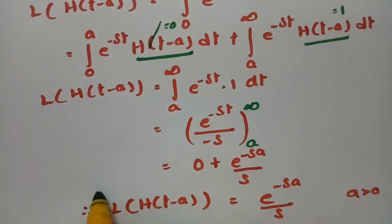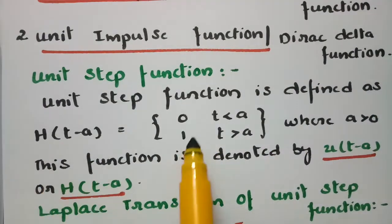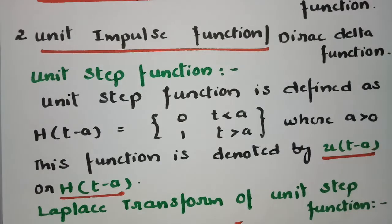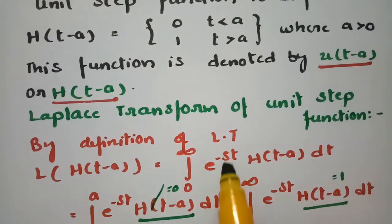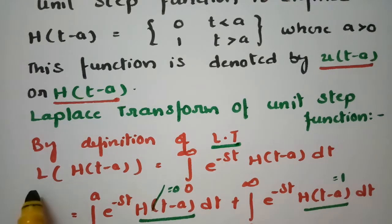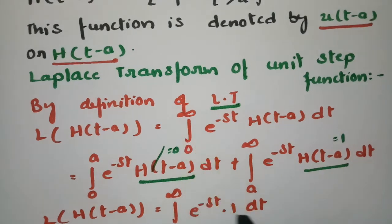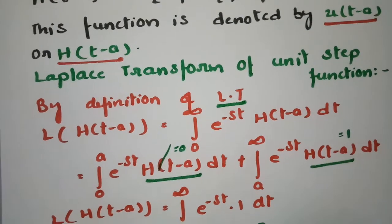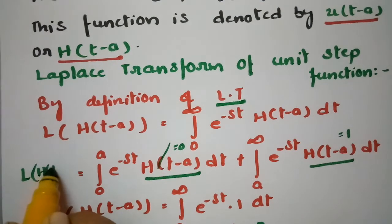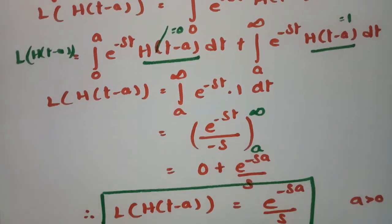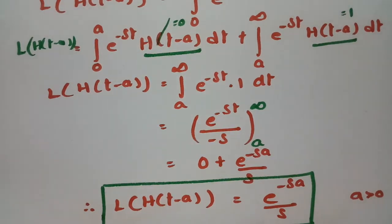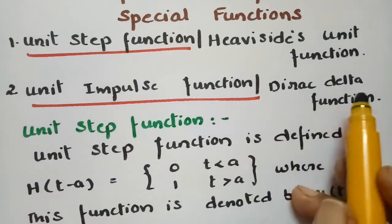So this is the result for the unit step function or Heaviside unit function. To summarize: the unit step function H(T − A) is defined as 0 when T < A and 1 when T > A. Applying the Laplace transformation by definition and splitting the integral at A, we get the result. Now coming to the second special function, that is the unit impulse function or Dirac delta function.